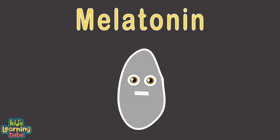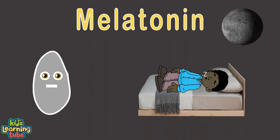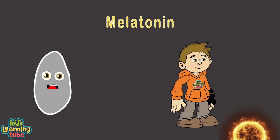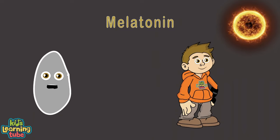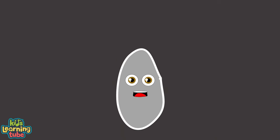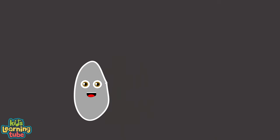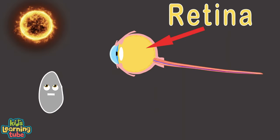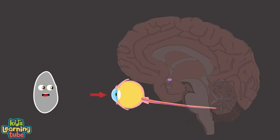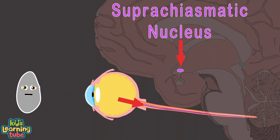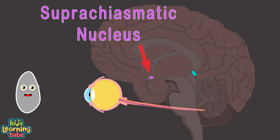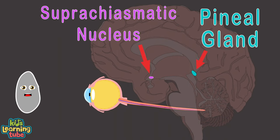I secrete melatonin highest in the middle of the night to keep you asleep until the first daylight. Melatonin levels decrease when it's closer to dawn and drop down during the day so you don't yawn. The schedule of melatonin release is regulated by signals from the retina from the light outside. These signals travel to a nucleus called the suprachiasmatic nucleus, then to the pineal gland.